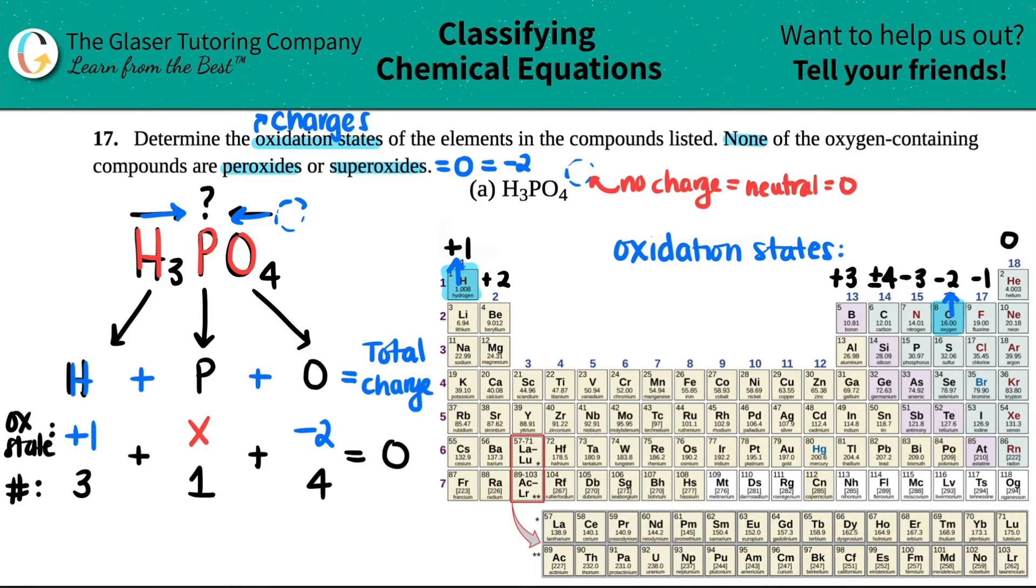All you have to do now, we're getting closer, is you're just going to multiply these together. And the sum of them will equal zero. So let's see. Three times a plus one is three, plus one times X, X, plus negative two times four is actually a negative eight. So plus a negative eight is really minus eight. And that all equals zero.